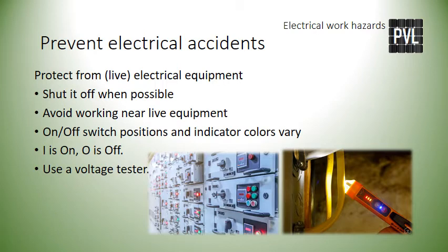Electrical equipment that is accessible may be energized — ensure it is not live before working on it. If working on live equipment is absolutely necessary, the proper PPE will be necessary. At times it is more cumbersome and time-consuming to don the appropriate PPE than to just shut off and lock the power. For example, to safely work on an electrical component of over 50 volts, you are required to wear rubber insulated gloves with cloth inserts and leather gloves.